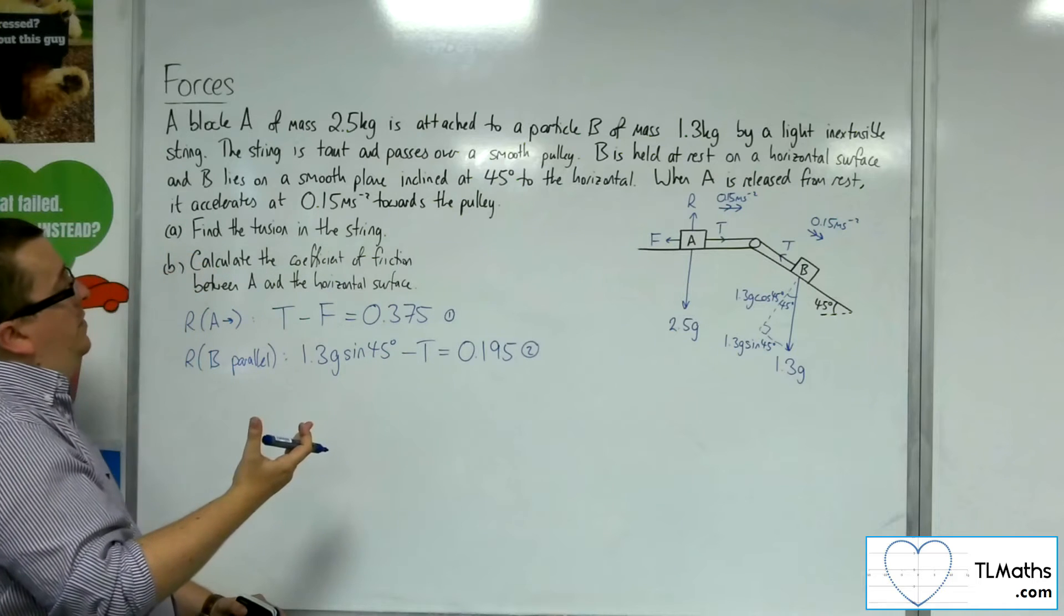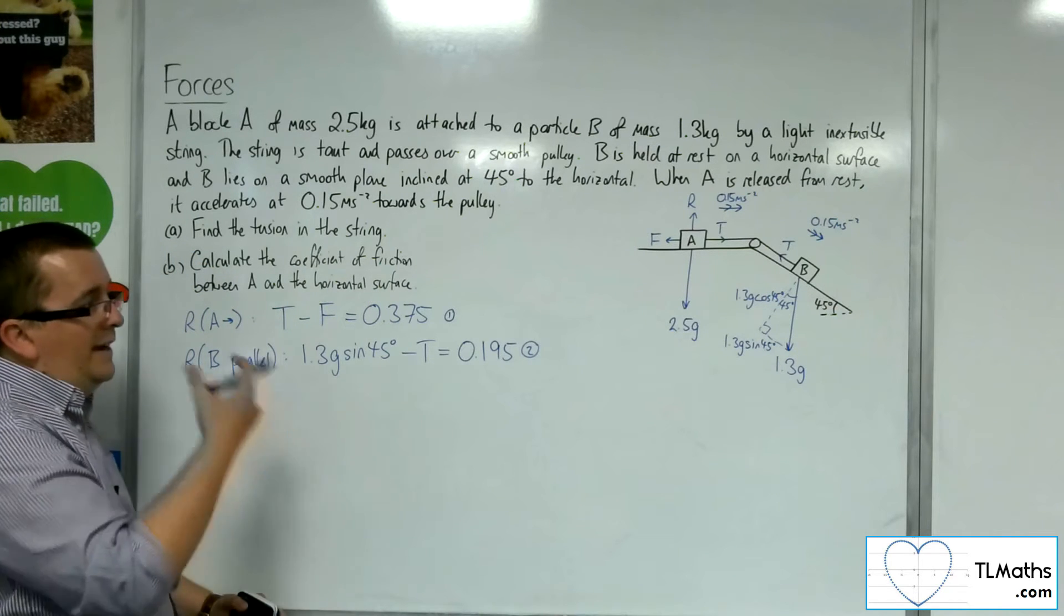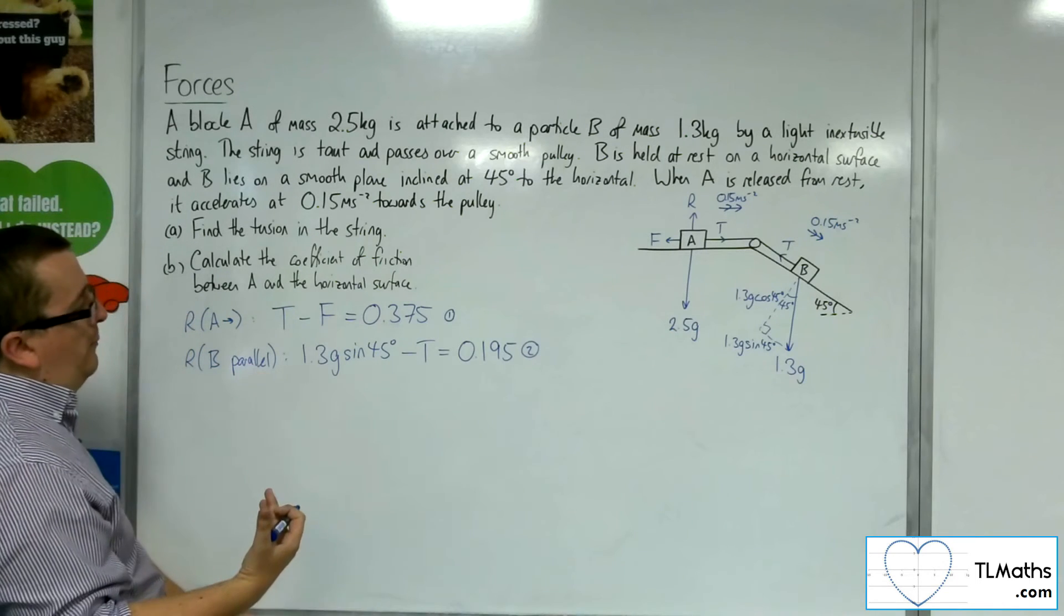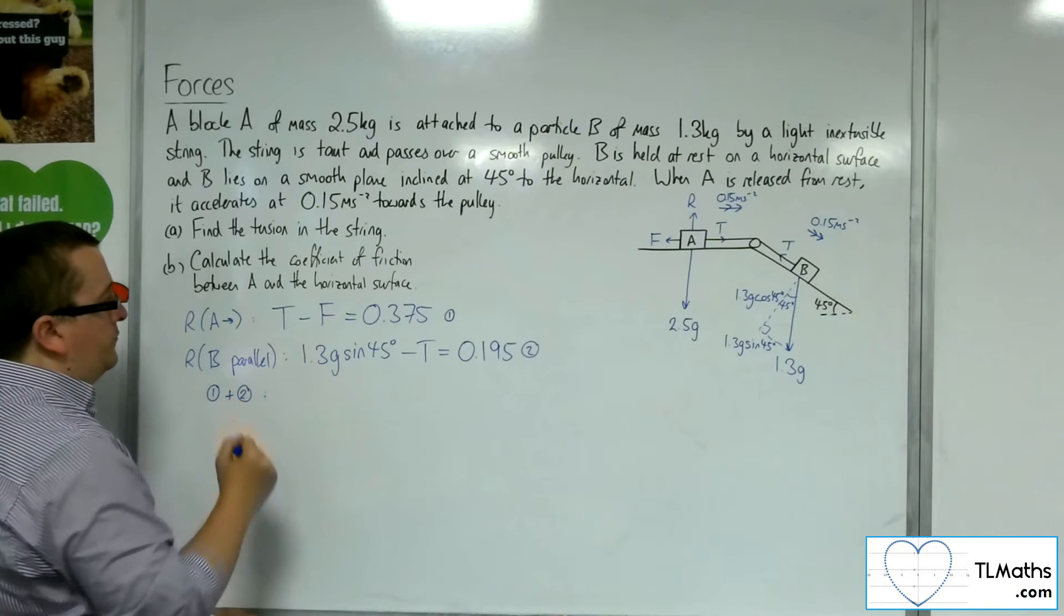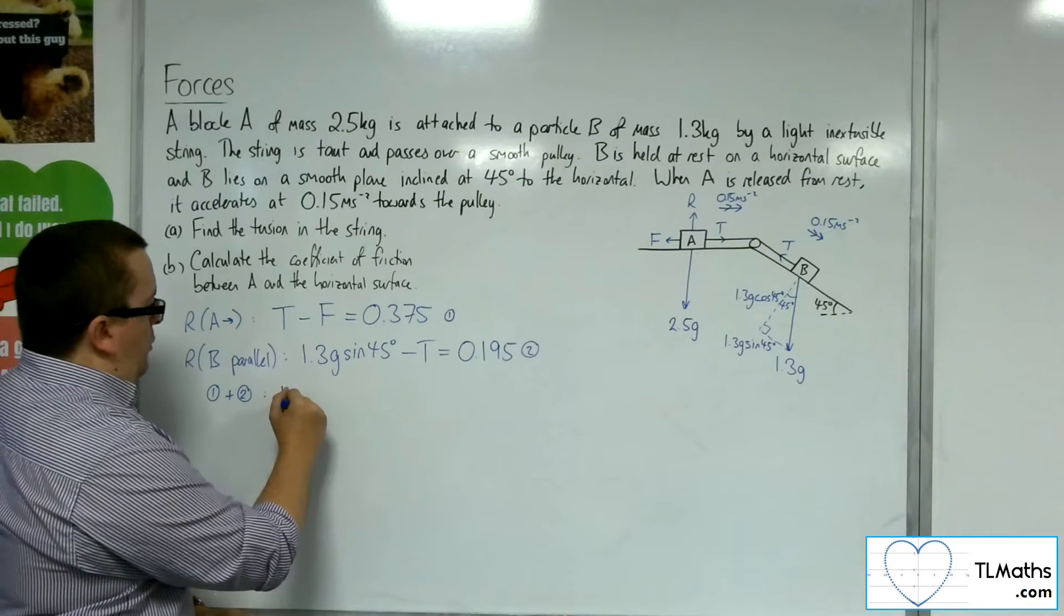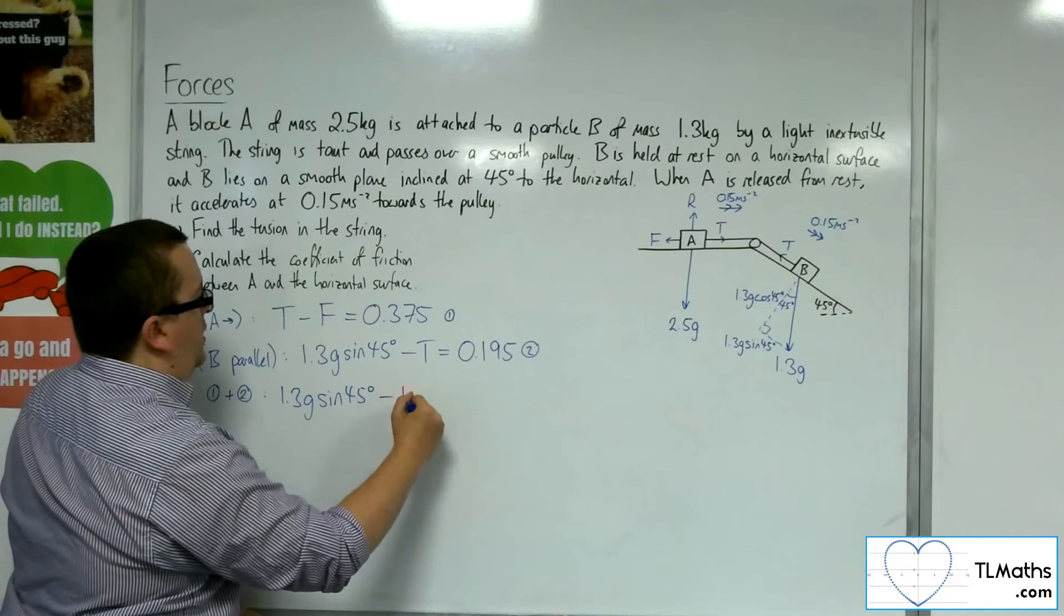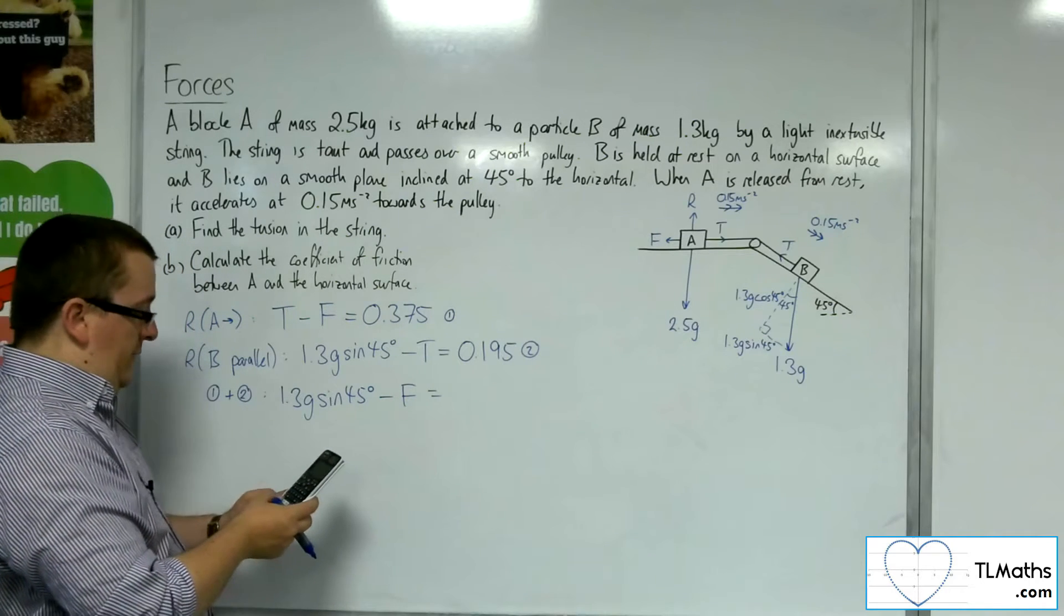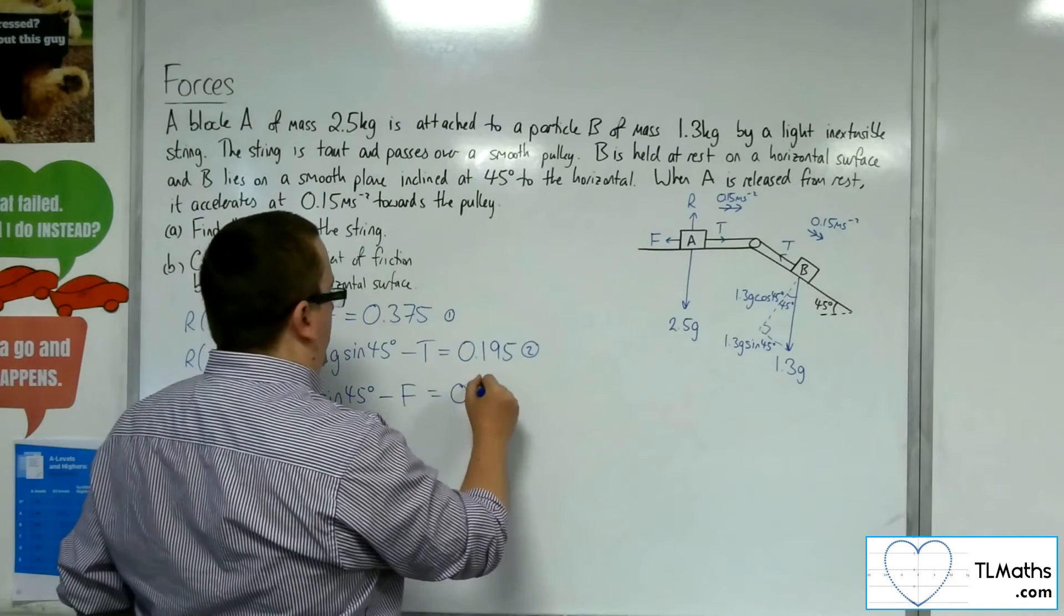So I can add those two equations together, and that will get me the friction. And then I'll be able to substitute and get the tension. So equation 1 plus equation 2, I've got the 1.3 G sine of 45, take away the frictional force, is equal to, I've got the 0.375 plus the 0.195, which is 0.57.